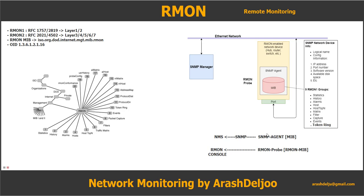In SNMP, we have an SNMP agent, an NMS (Network Management System), and also a MIB (Management Information Base). The SNMP agent should gather information about the device itself from the MIBs, and then with SNMP messages should send them to the NMS.